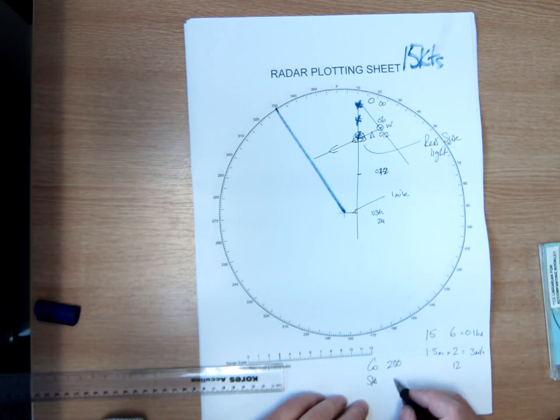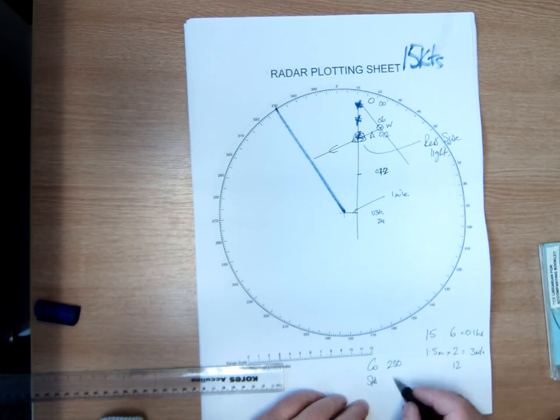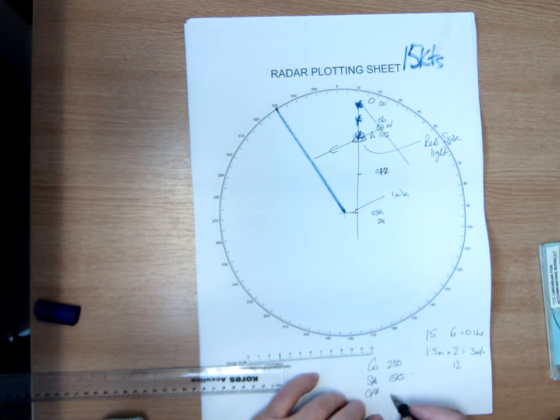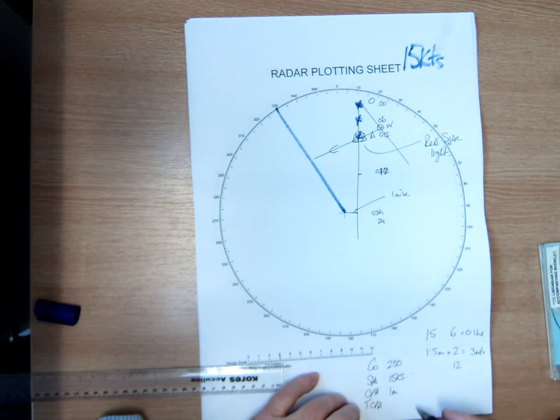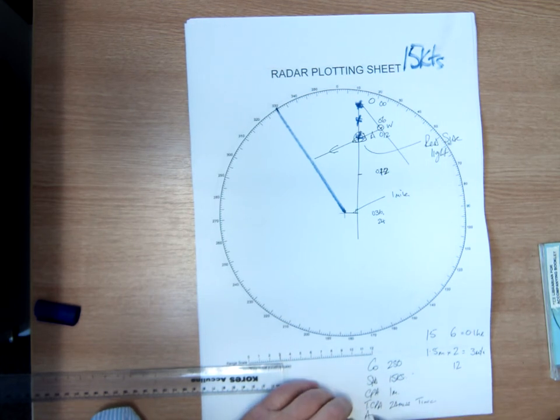Her speed is three miles in the same, so her speed must be - anybody? 15. So she's doing three miles in 12 minutes, so same as us, yeah, 15 knots. CPA is one mile, we said. Time of CPA is in 24 minutes time. And now I need to work out what the aspect is.